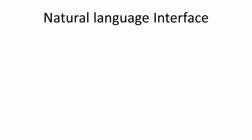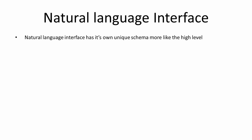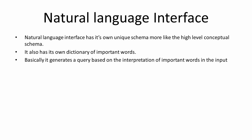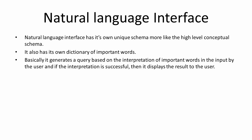Next is natural language interface. This interface has its own unique schema - more like a high-level conceptual schema - and its own dictionary of important words. It generates a query based on the interpretation of important words inputted by the user. If the interpretation is successful, it displays the result to the user.